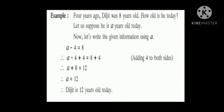The value that is a minus 4 is equal to 8 is because Diljit's age is given 4 years ago. Now, by adding 4 to both sides, because to keep the equation balanced, we have to perform operations on both sides of the equation. We get the answer a plus 0 is equal to 12. So, the value of a is 12.